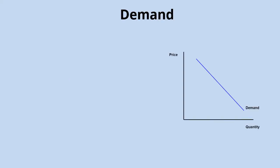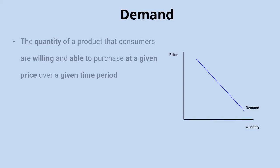Starting off with demand: the definition is the quantity of a product that consumers are willing and able to purchase at a given price and over a given time period. In order to demand a good, consumers have not only got to want to buy it, but they've also got to have the ability to back that up in terms of affordability.